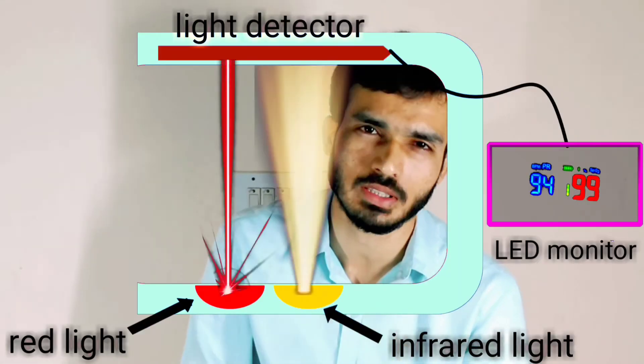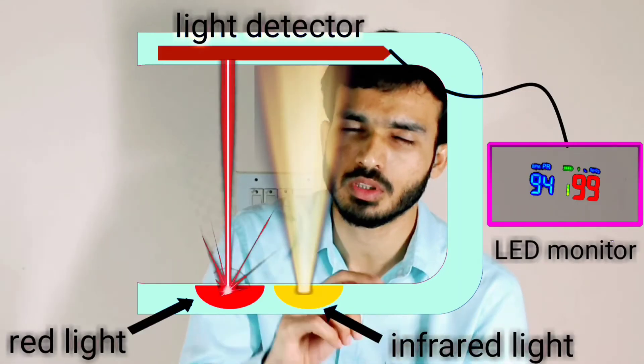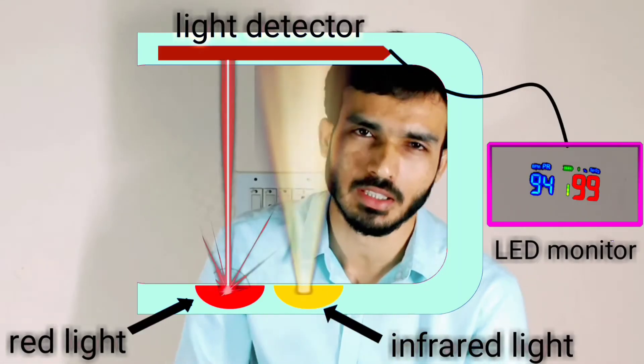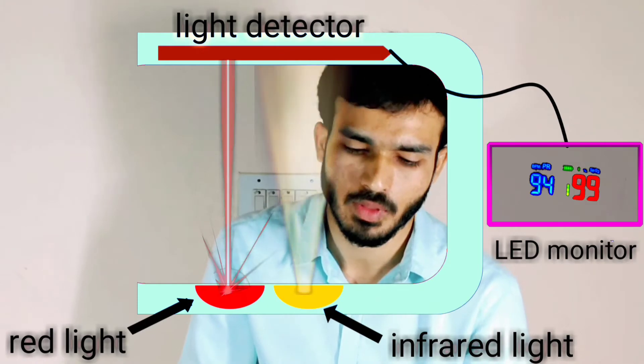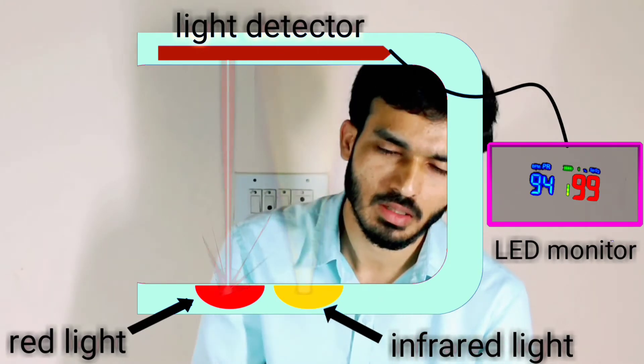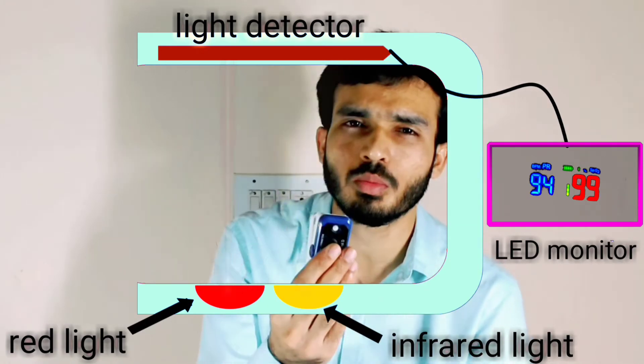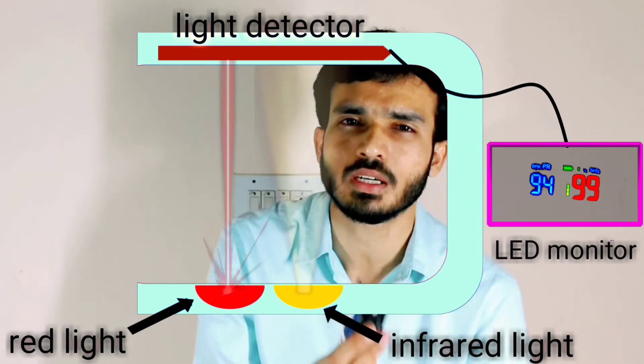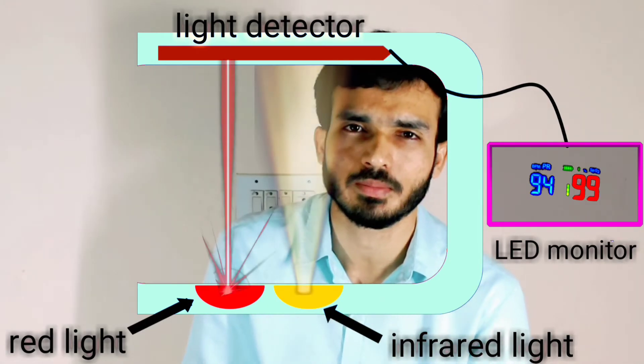This circulating blood contains oxygen, and that will be detected by the probe present in the oximeter.